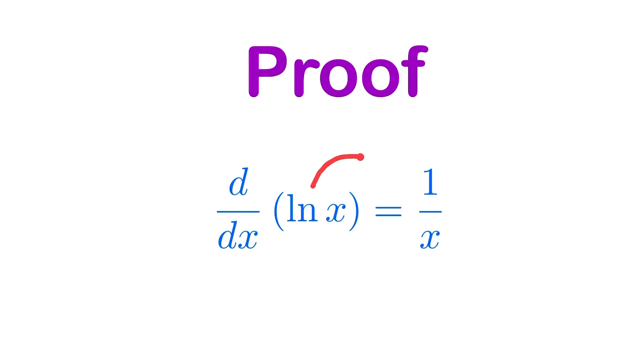The derivative of the natural logarithm is 1 over x. But how do we prove that?